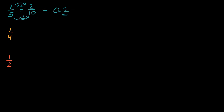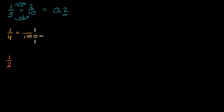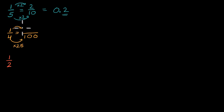Now let's do 1/4. How can I represent this as a decimal? Well, you might first ask: can I represent this as a certain number of tenths? But 10 is not a multiple of 4, so let's see if we can do it in terms of hundredths, because 100 is a multiple of 4. To go from 4 to 100, you multiply by 25, so multiply the numerator by 25 to get an equivalent fraction — 1 times 25 is 25.